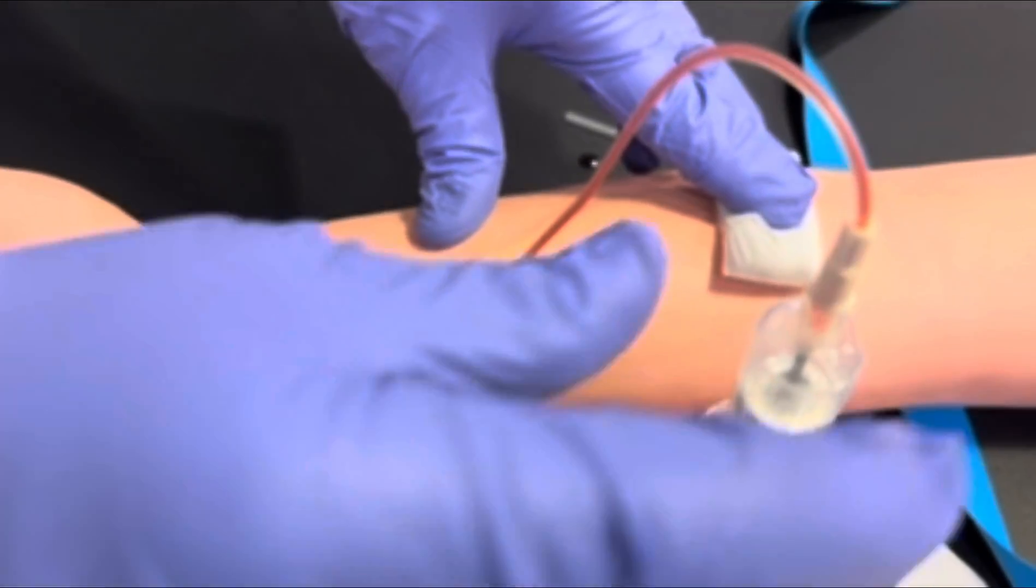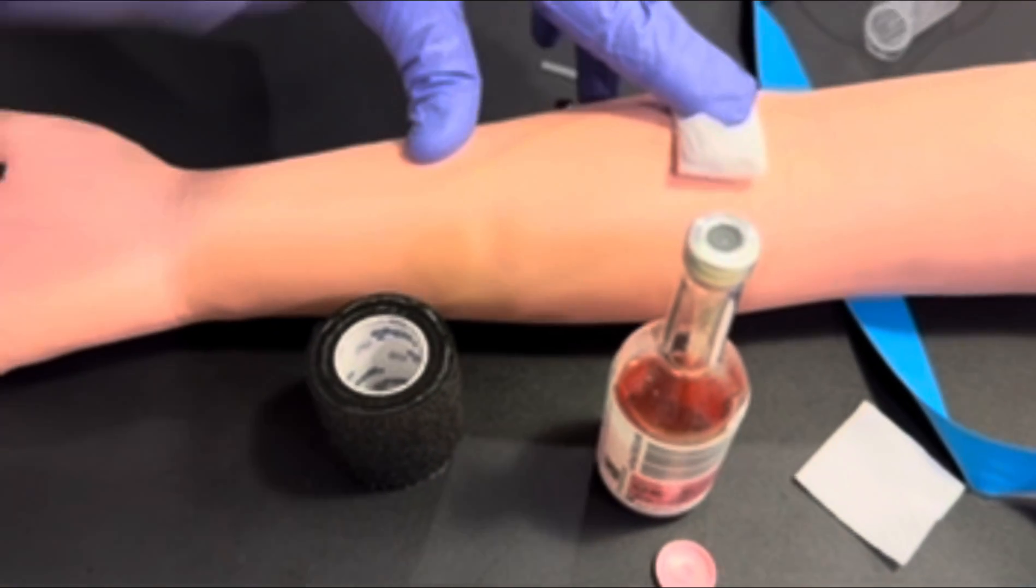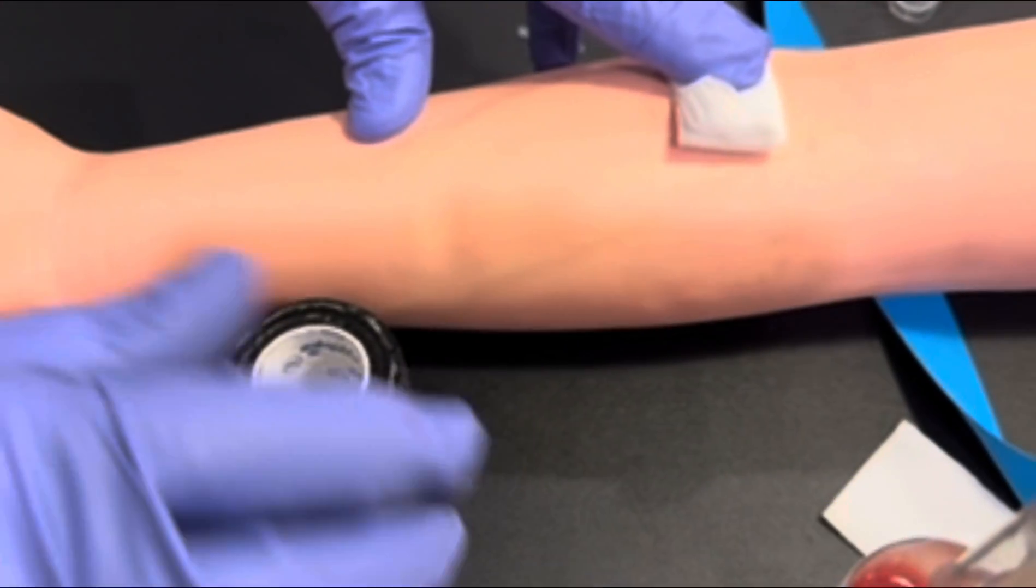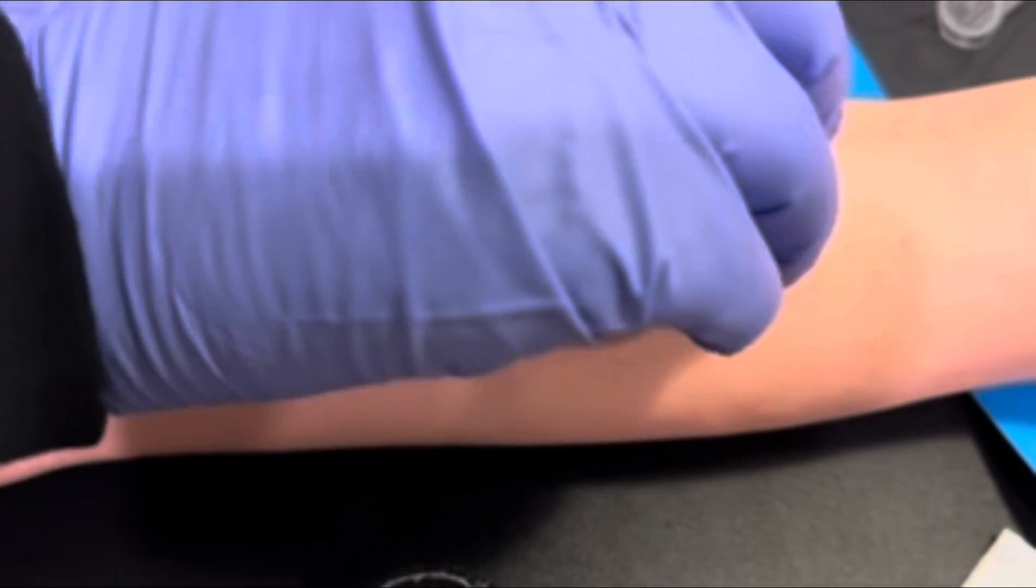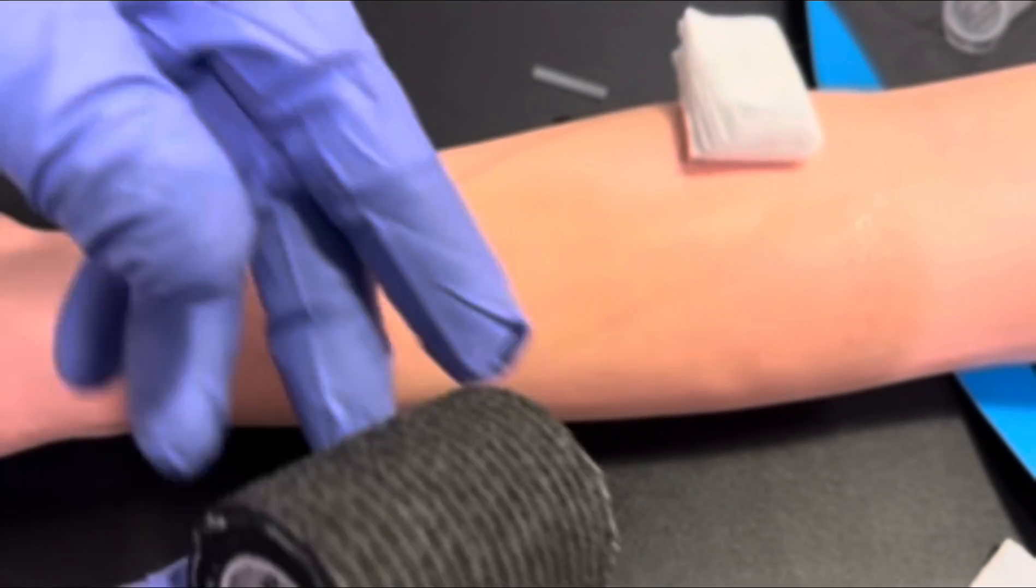Retract your needle. Apply gauze to the venipuncture site. Assess the site to make sure that it's stopped bleeding.